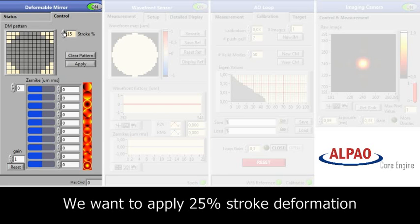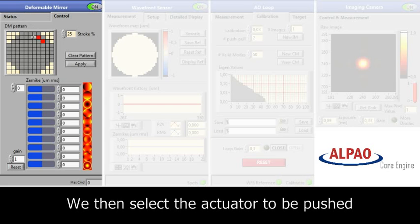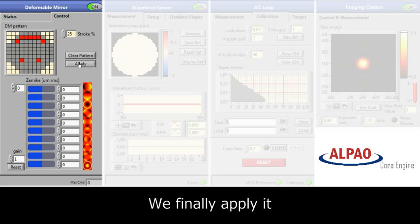Here we can change the mirror shape actuator by actuator by selecting the desired stroke and clicking on the actuators which correspond to the actuators in the mirror. Here we click on the actuators we want to change, and then we apply the pattern.